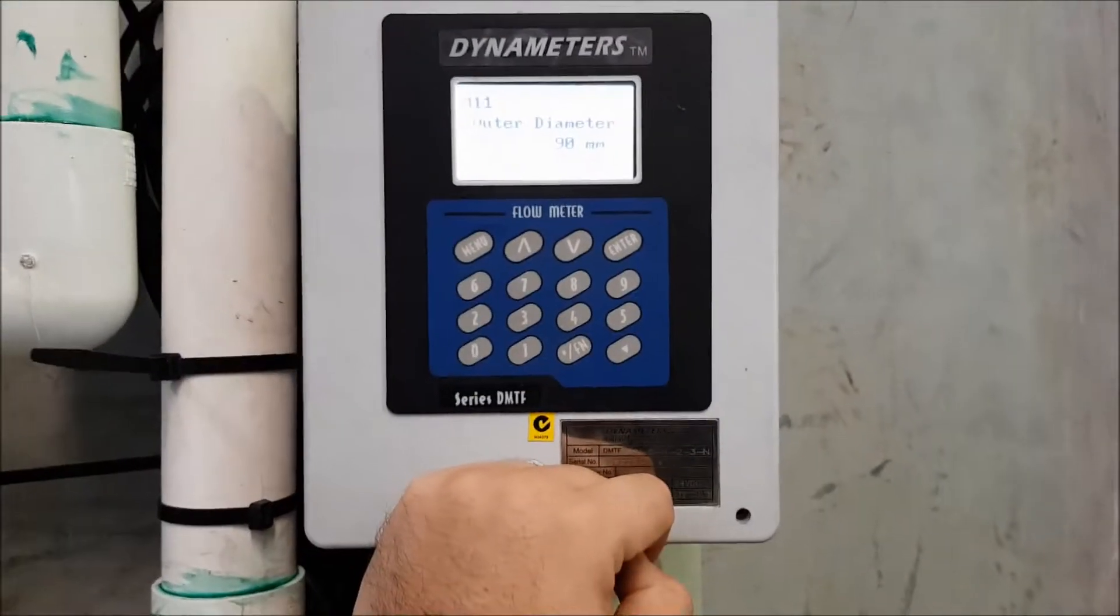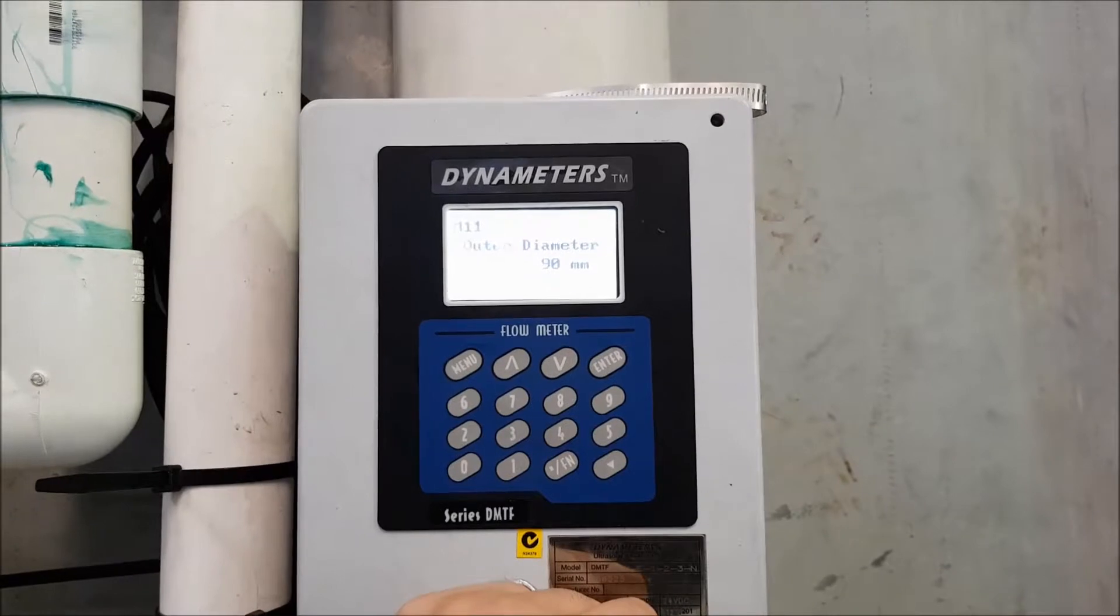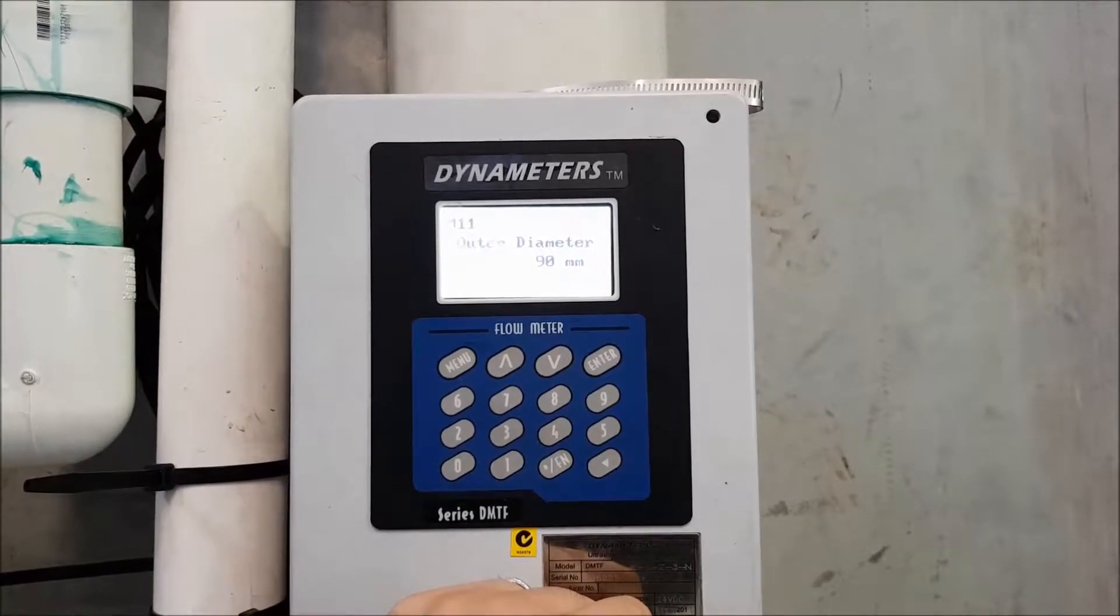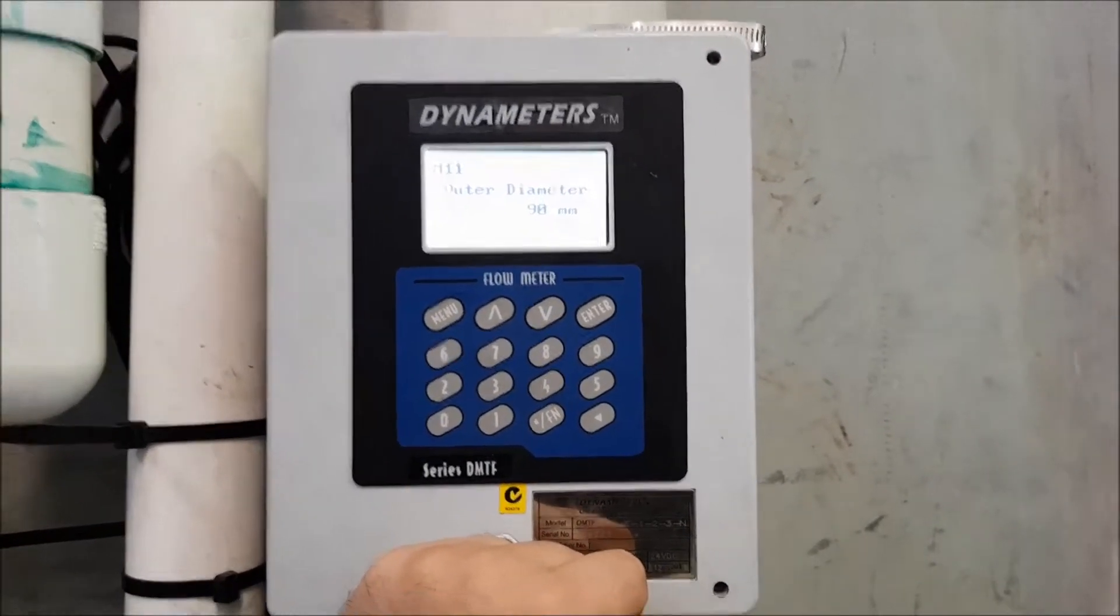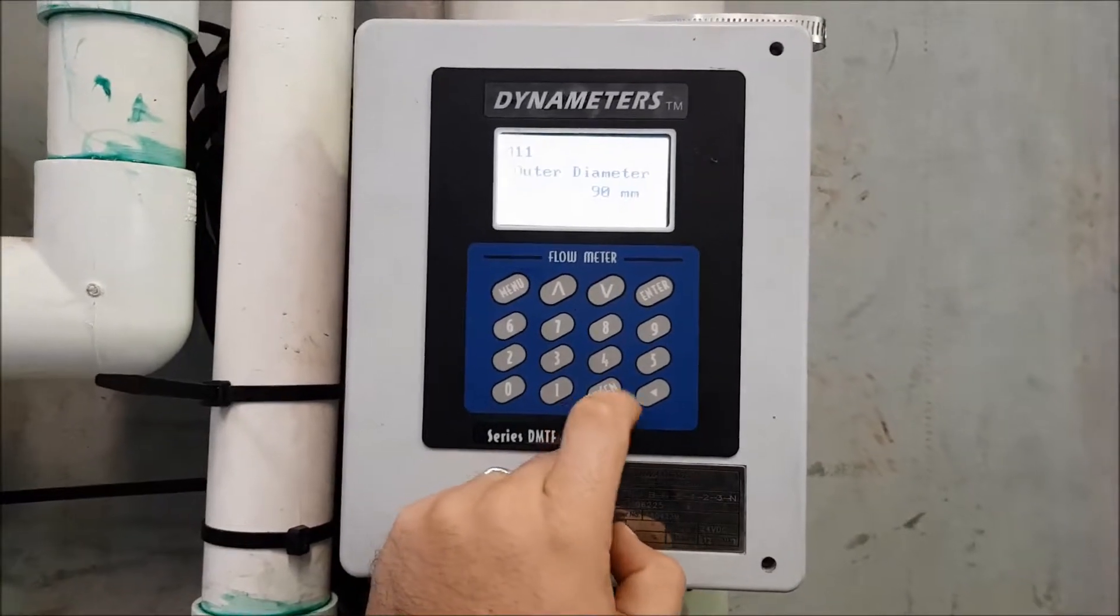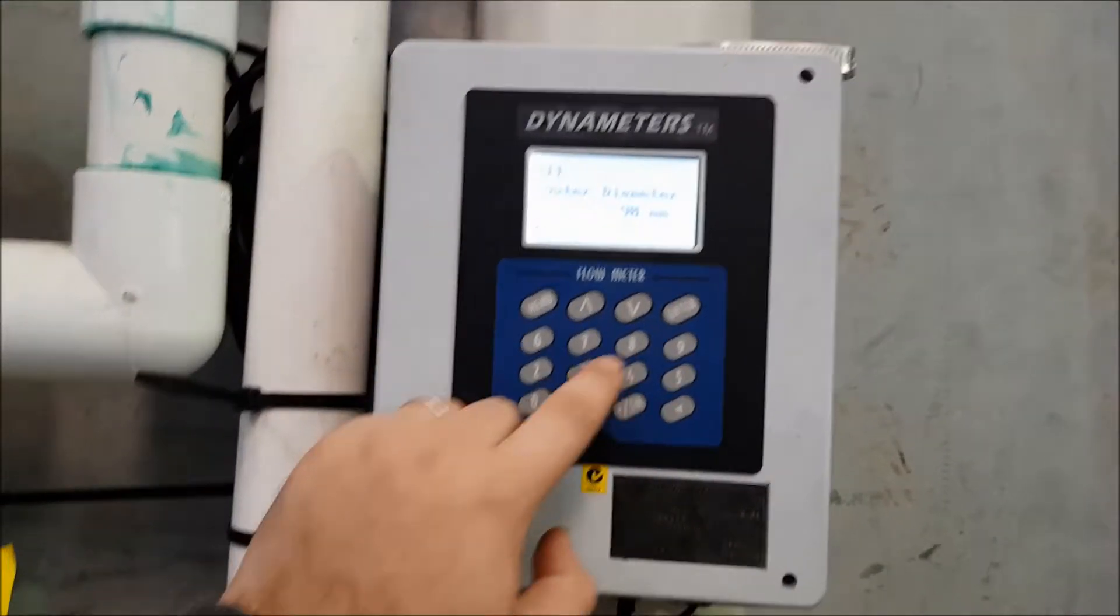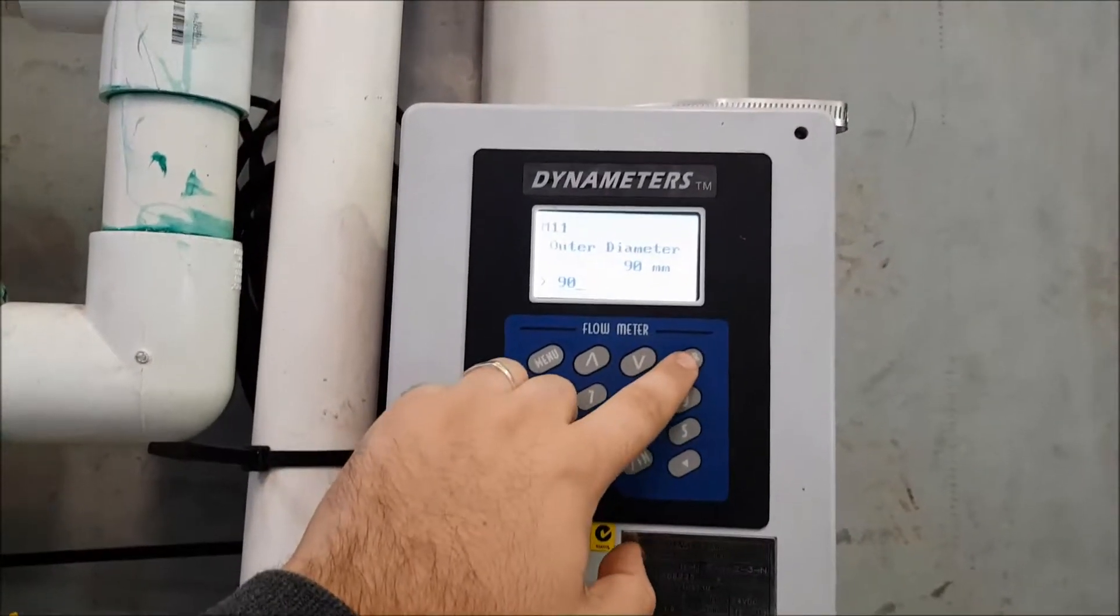Menu 11 is the first one we need to set the parameter for. OK, so it asks for the outer diameter of the pipe. In this case, the pipe is 90mm. But to set it, I just press enter, type 90 and press enter again.